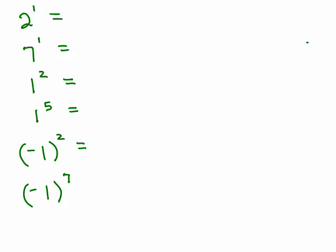Let's just do a couple more. What would 2 to the first power be? That means you only have one factor of 2, so it's 2. Similarly, 7 to the first power would just be 7, one factor of 7.